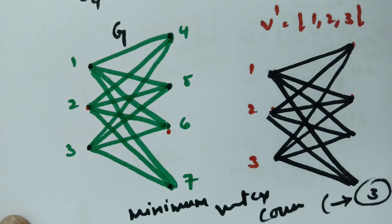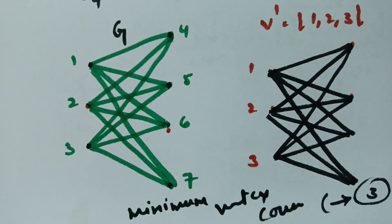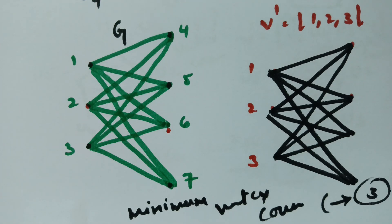We take a subset of the main vertex set and check if all edges of graph G are covered. If they are, that is a vertex cover. The minimum number of vertices used to cover all edges is called the minimum vertex cover. This was about vertex covering; my next video will be on edge cover. Thank you for watching.